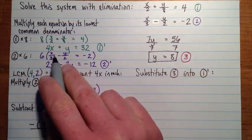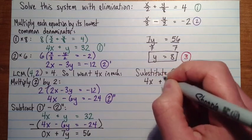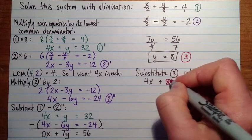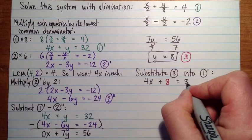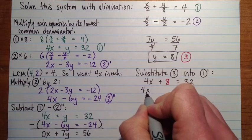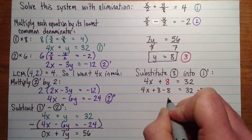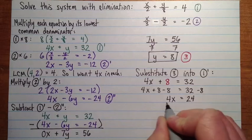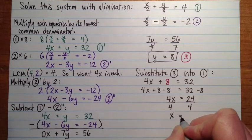So 1 prime is 4x plus, and then the y is 8. And it should be equal to 32. So now I want to isolate x, so I'll subtract 8 from both sides. So we have 4x equals 24. So to isolate x, we'll divide by 4. We have x equals 6.